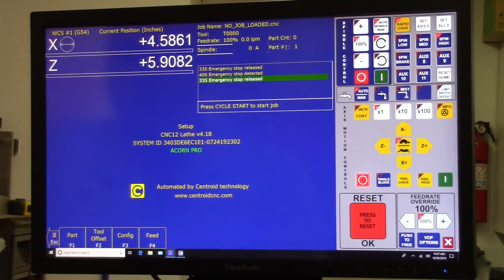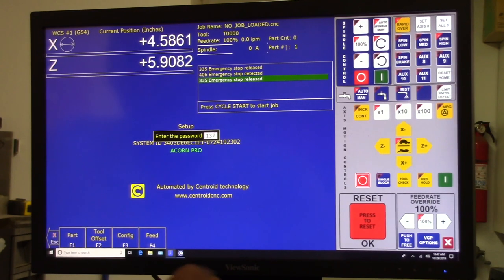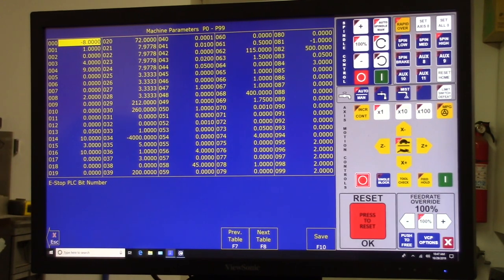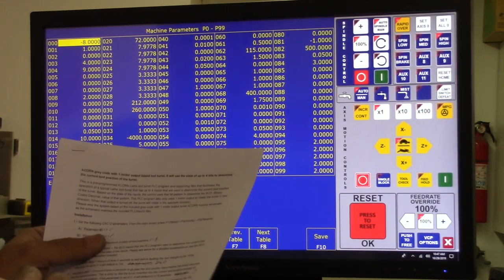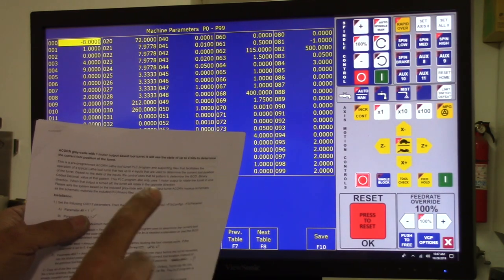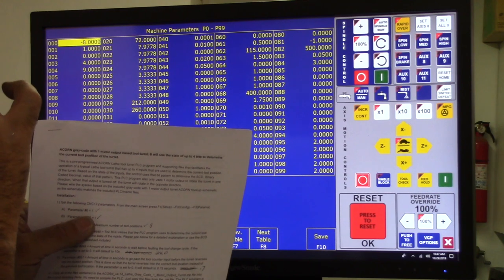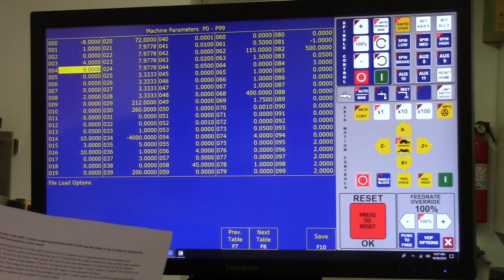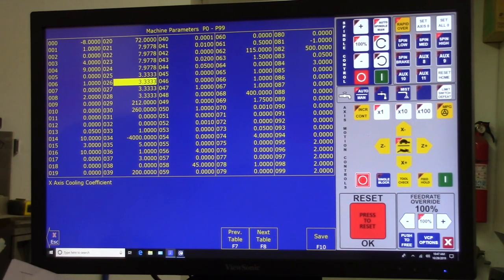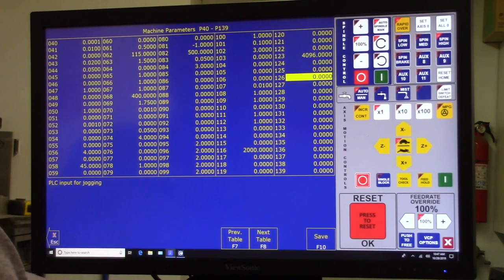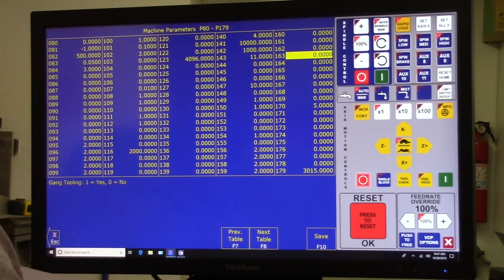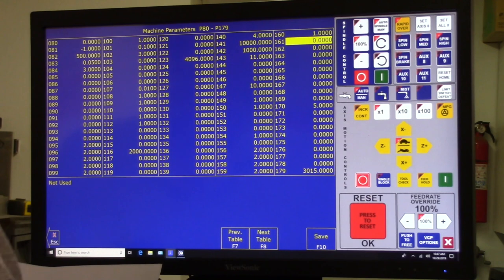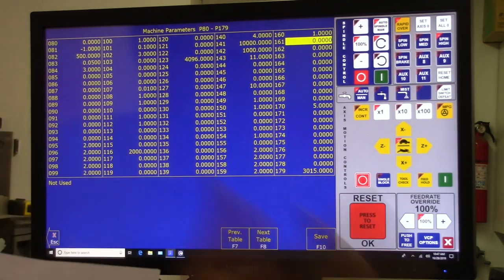I'm going to do F1, F3, 137, enter. We're going to go to F3 parameters. And the very first parameter says to change for this particular one. For this particular ACORN gray code with one motor output base tool turret. So this applies to this particular application only. So remember that. So we go down to parameter six. It says to change it to one. And it says parameter 160. It says change that to one. Parameter 161. Maximum number of tool positions. In this case it's eight. So I'm going to put eight in there.